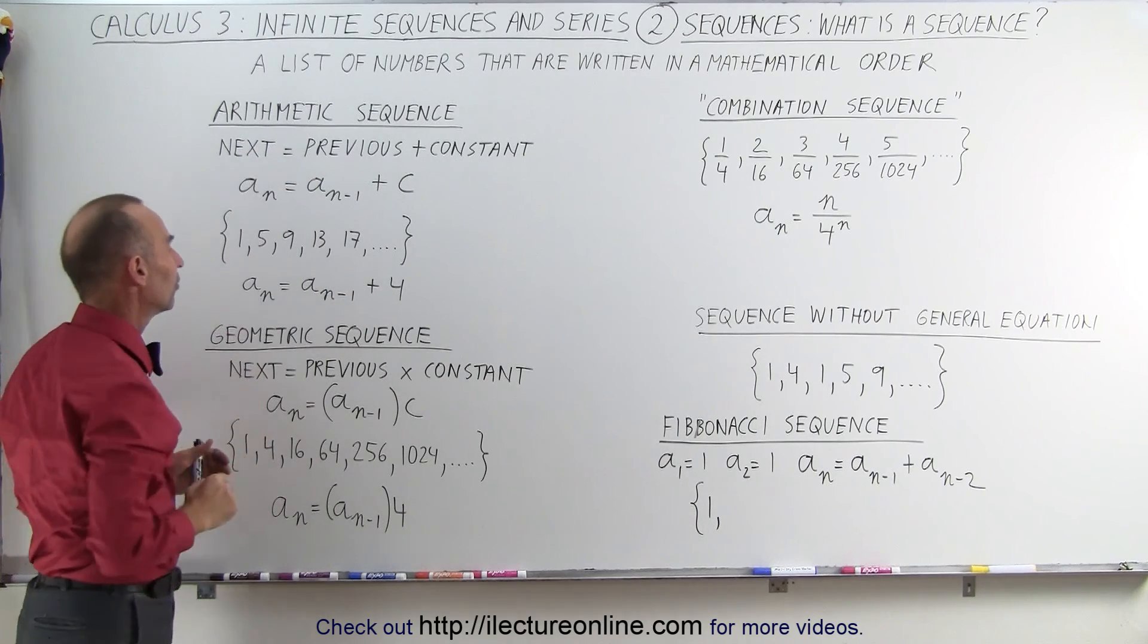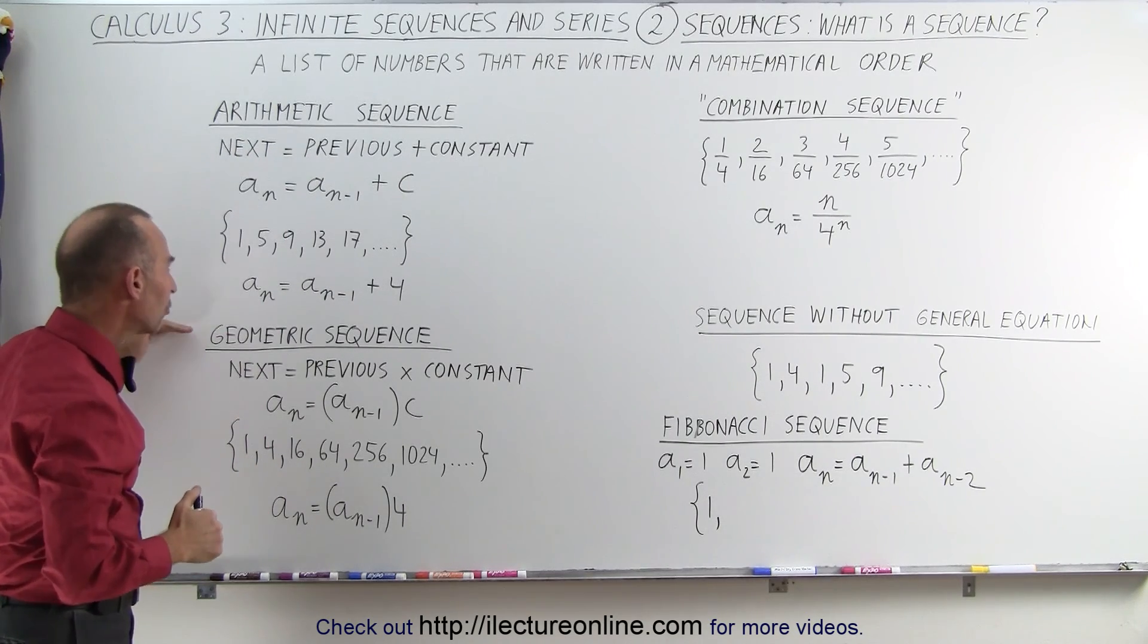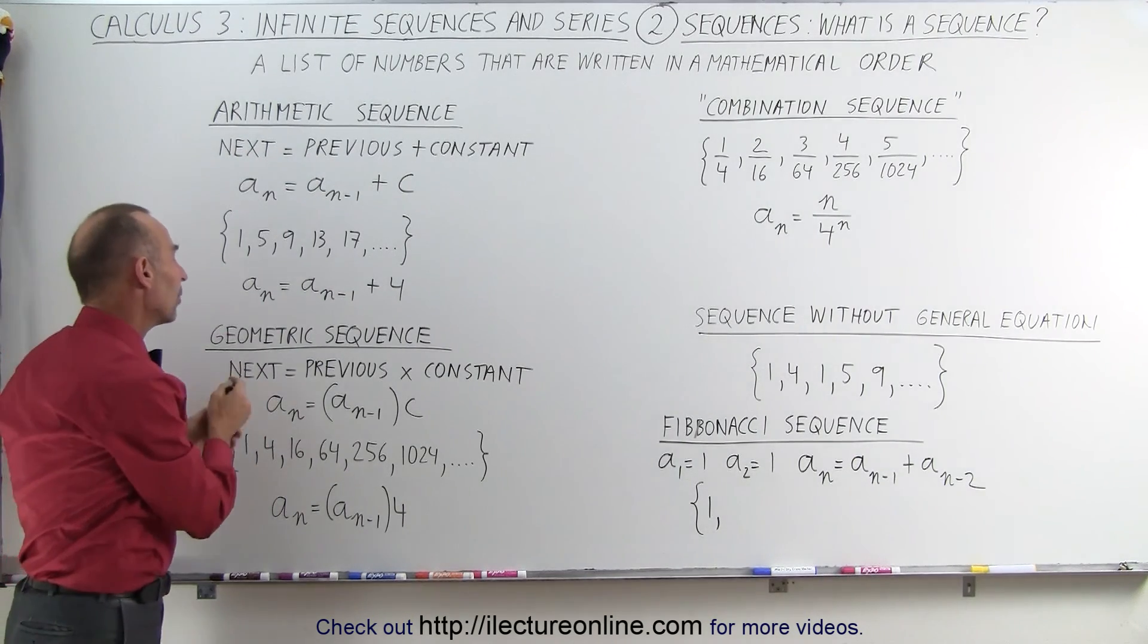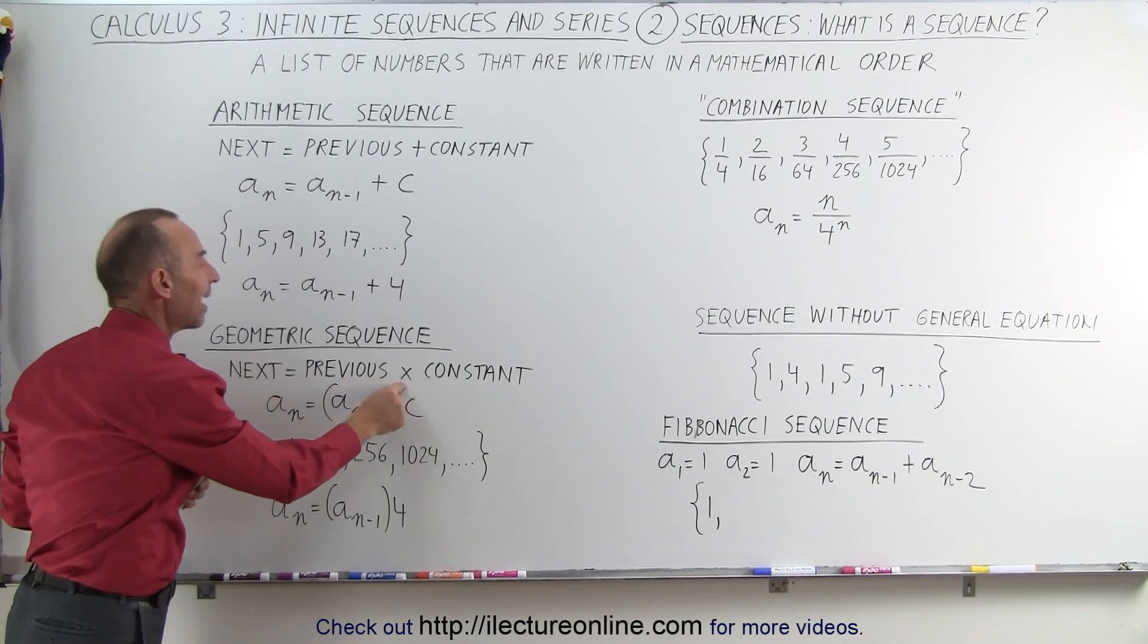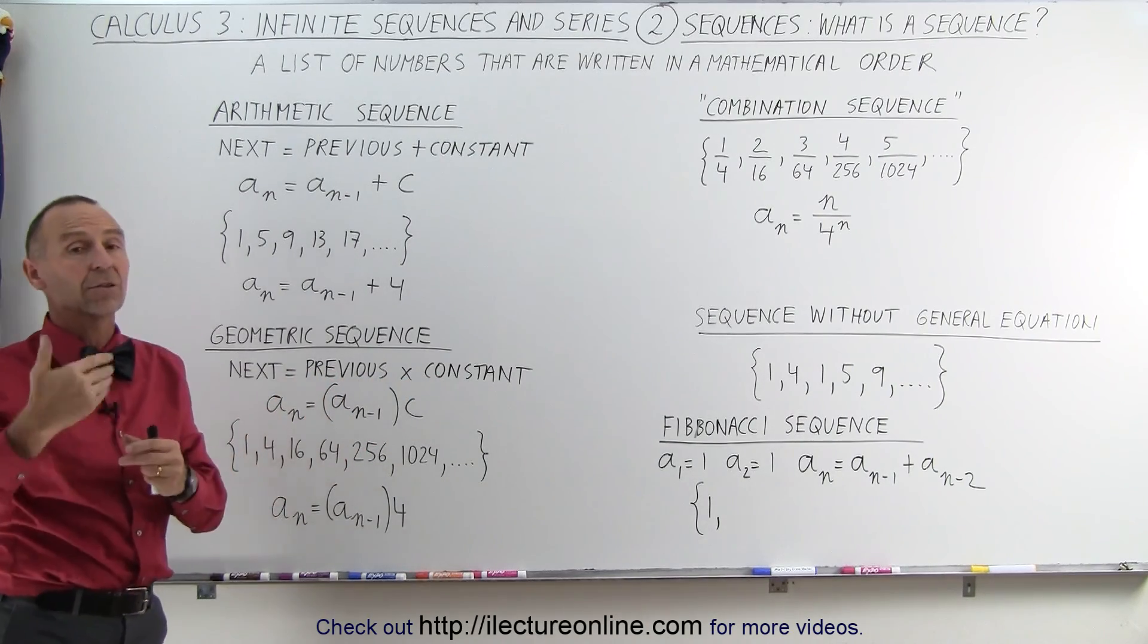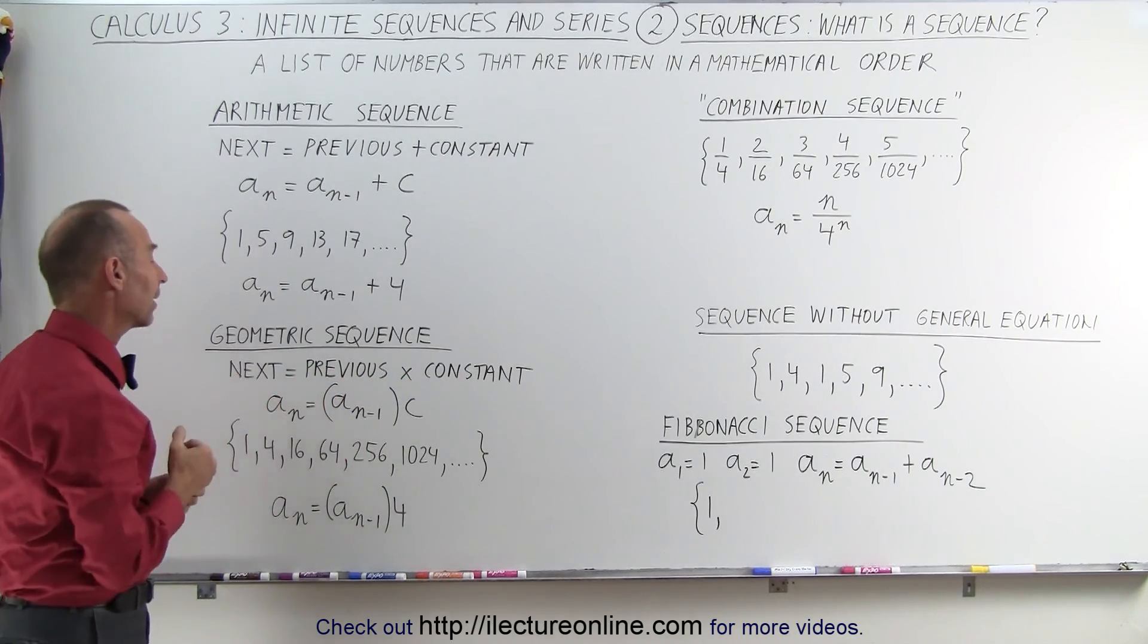A geometric sequence is where the next number is equal to the previous number times a constant, not added a constant, but multiplied by a constant.